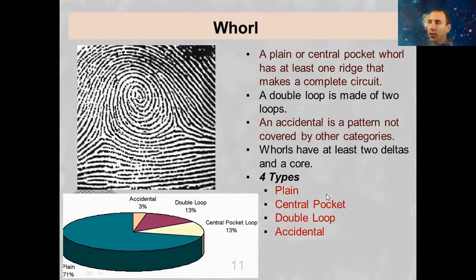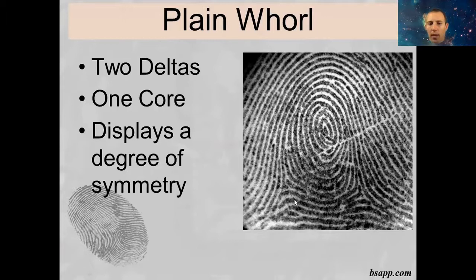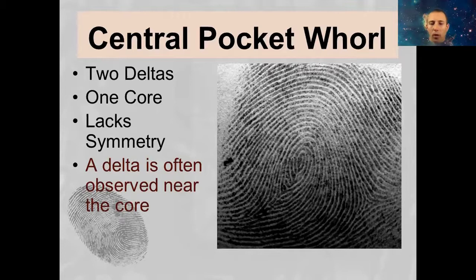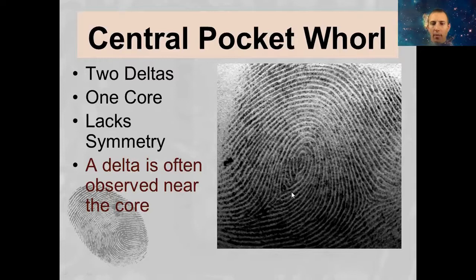Let's look at the different kinds. We've got two deltas — one delta here and one here — and one core in the middle. If it's really symmetrical, if you could draw a line down the center and it looks approximately the same on both sides, that's going to be what we call a plain whorl. A central pocket whorl is very similar to a plain whorl, except one of those deltas has pushed closer to the center core, giving it an almost crooked diagonal-looking shape. If you draw a line down the center of a central pocket whorl, notice how it is not symmetrical.